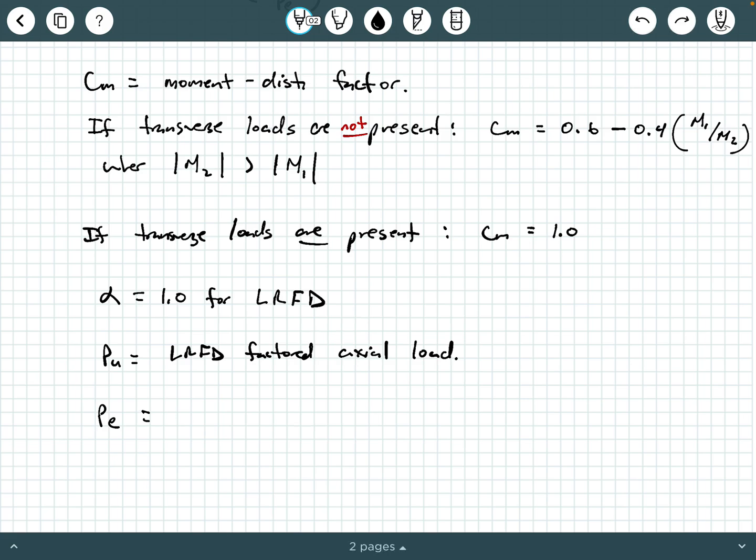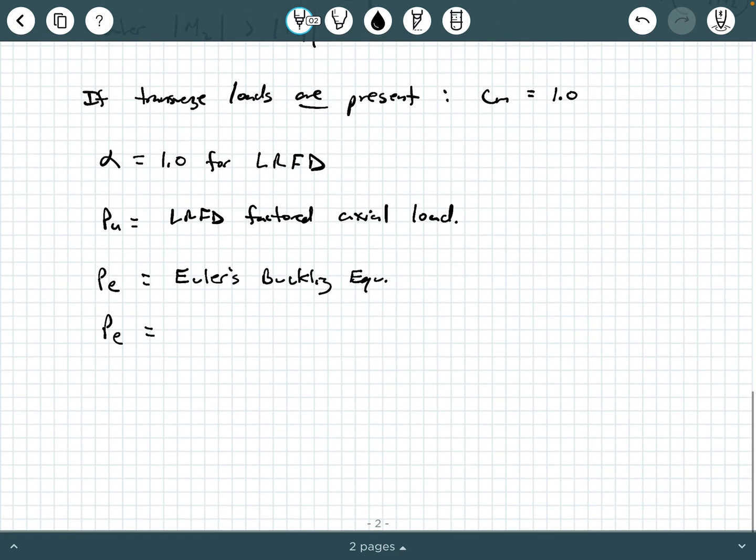And then PE is Euler's buckling equation. And so you may remember this from mechanics of materials or a structural analysis course. That's PI squared EI divided by KL squared. And so again, what is I? I here is the moment of inertia about the flexural bending cross section axis.